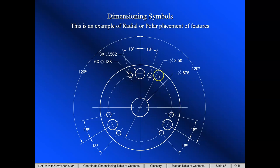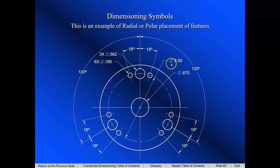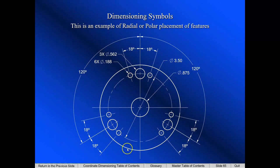The bolt circle — this number defines the diameter of the centerline circle on which the holes are arranged. We need to define the diameter, and we should also add 'BC' after it — so 'diameter 3.50 BC' — where BC stands for bolt circle. This helps clarify that this is a location dimension for the holes, along with the angle of each hole relative to the others.